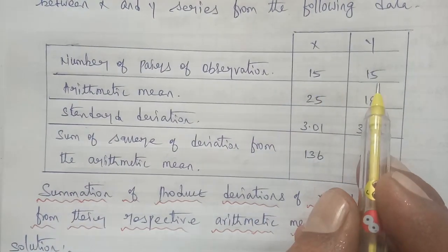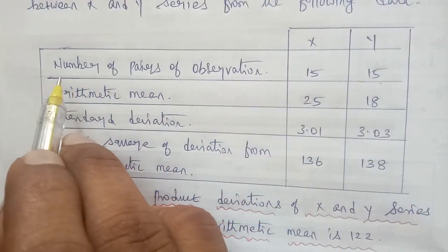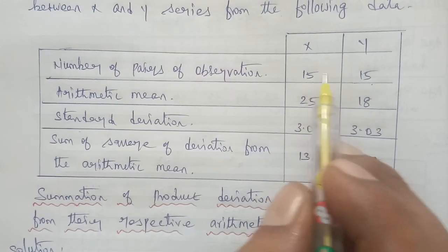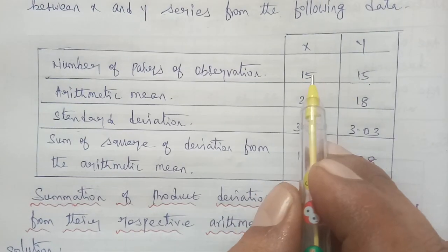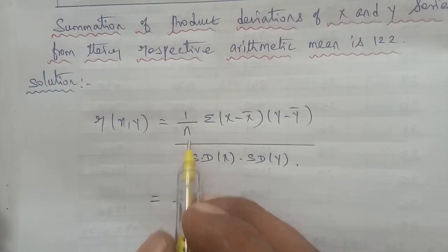So n is equal to 15, that is the number of observations is 15. Here the n value is 15.